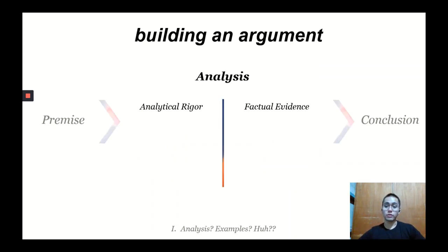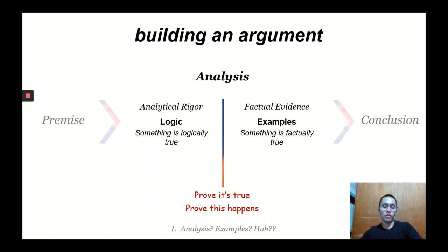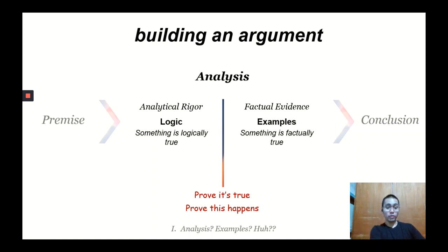There are two ways you can demonstrate something to be true — your initial claim or your conclusion being a likely outcome. You have analytical rigor, using logic so that something is logically true and the conclusion follows from sets of points. Or you use factual evidence — 'we've seen this here' or 'this is what usually happens in this instance.' Both things help prove that claims are true or that what you argue actually happens.